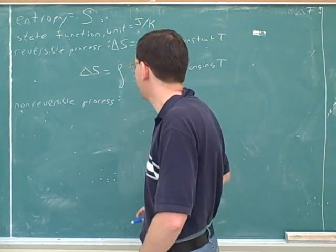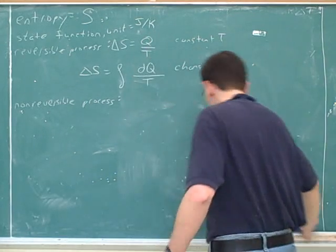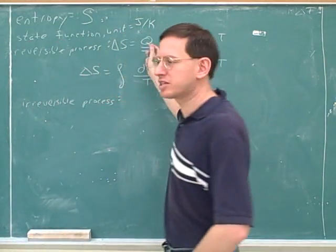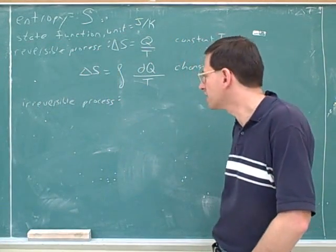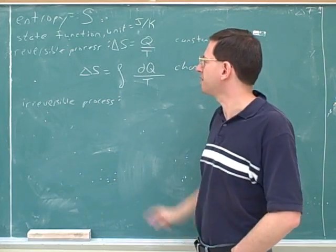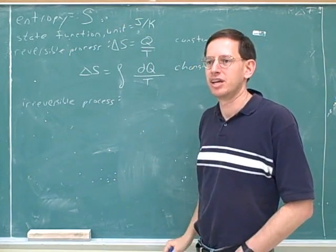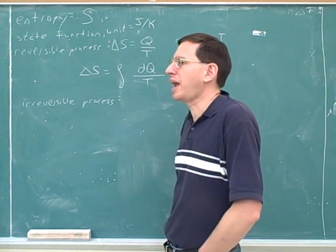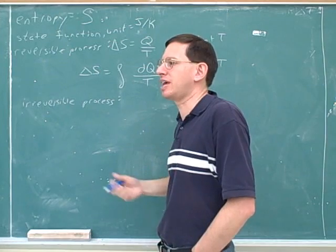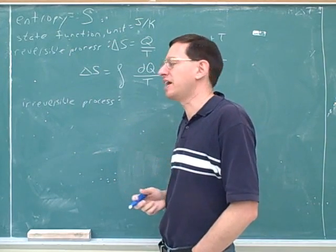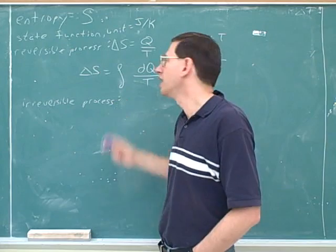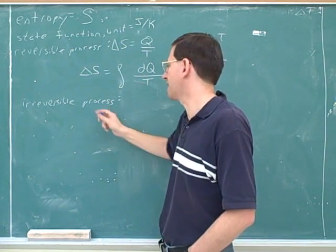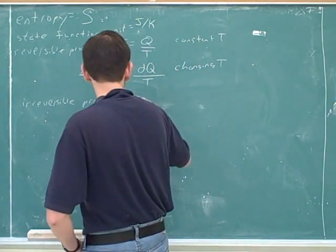How can we find the entropy change for an irreversible process? We can't just use these formulas because they're for reversible processes, but we can use the trick that S is a state function. So if we're trying to figure out delta S for an irreversible process, we should compare it to a reversible process with the same starting and ending point. Just find a reversible process with the same starting and ending point, then find its delta S using these formulas, and that would be the same as the delta S for the irreversible process.